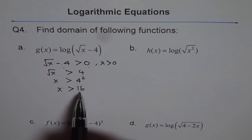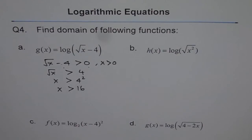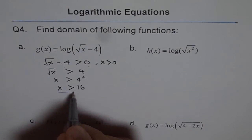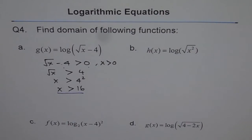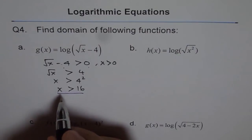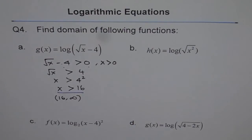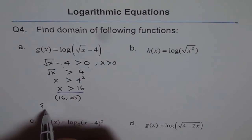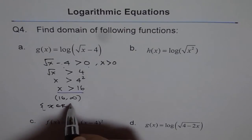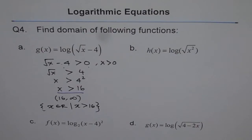So we have two restrictions: x greater than 0, and x greater than 16. x greater than 16 is the more restrictive condition, so that becomes our final restriction — values between 0 and 16 are not permitted. Therefore, we write the answer as x greater than 16, or in interval notation as (16, ∞), or in set form as x belongs to real numbers where x is greater than 16.